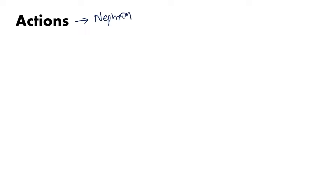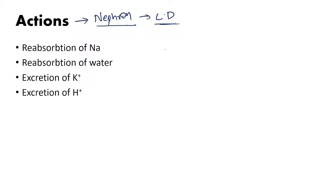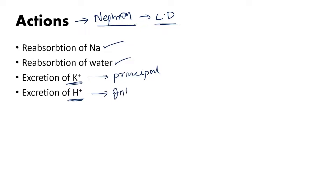Next let us understand the actions. The action of aldosterone is predominantly on the nephron of the kidney — more specifically, it acts on the collecting duct. Its four predominant actions are: reabsorption of sodium, reabsorption of water, excretion of potassium, and excretion of H+ ions. Excretion of potassium occurs due to aldosterone's action on the principal cell lining the collecting ducts, while excretion of H+ occurs due to its action on intercalated cells, which also line the collecting ducts.